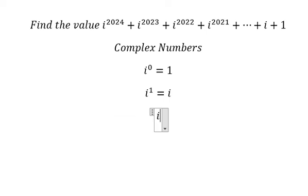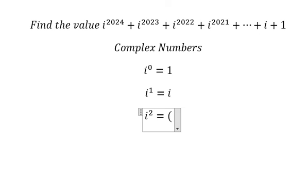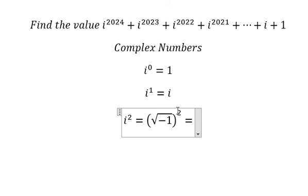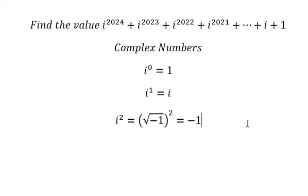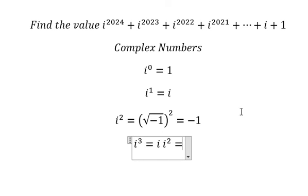i to the power of two — we know that i equals the square root of negative one, so squaring it gives negative one. i to the power of three equals i squared times i, and since i squared equals negative one, that gives negative i.